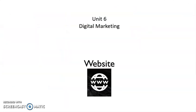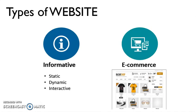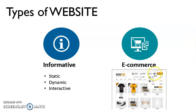Next, we look at the website. There are two common website types used for digital marketing. The first is the informative type, which provides information and can be static, dynamic, or interactive. The second is the e-commerce website, through which buyers can directly purchase products. This e-commerce website can be a third-party website where sellers pay to display their products to customers.